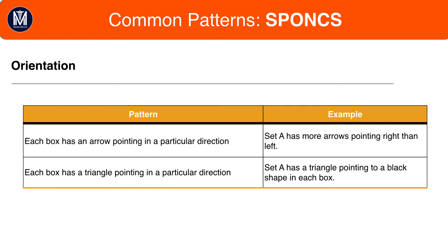Orientation patterns tend to be concentrated around two shapes: arrows and triangles, and most commonly arrows. As we'll see in the triggers section in the next tutorial, whenever you see arrows you always want to look for an orientation pattern, because they're normally very commonly associated with arrows.